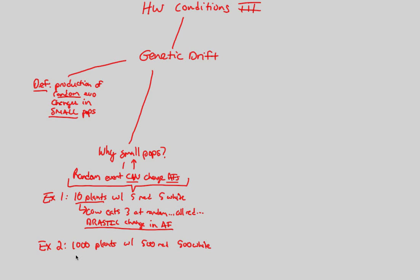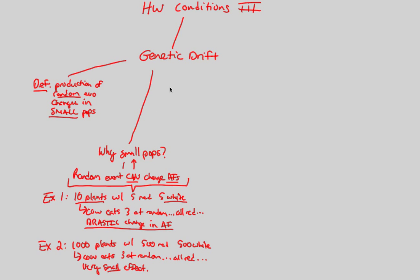What if we do the same scenario with 1,000 plants? The cow walks by and eats three at random, all three red. In this large population, literally nothing significant happens — you have a very small, tiny effect. The relative allele frequency will still be around 0.5 red and 0.5 white, plus or minus a very small percentage. This is why small populations are necessary for a random evolutionary change to occur. In the small population, the evolutionary change will gear toward white plants because of this genetic drift event.